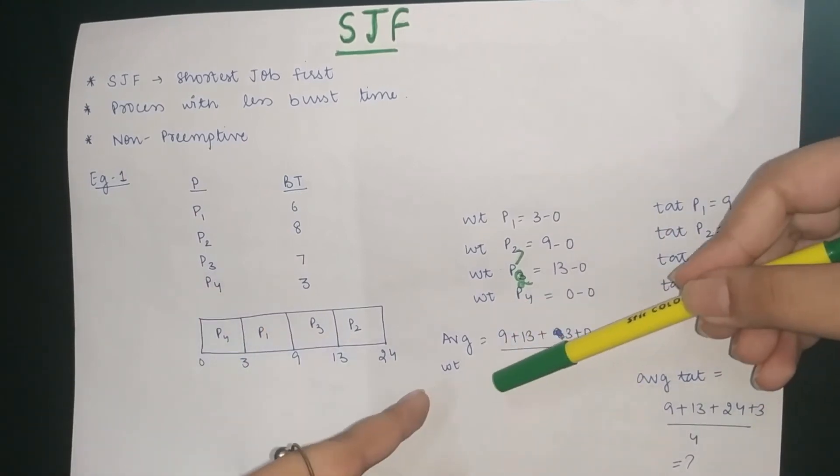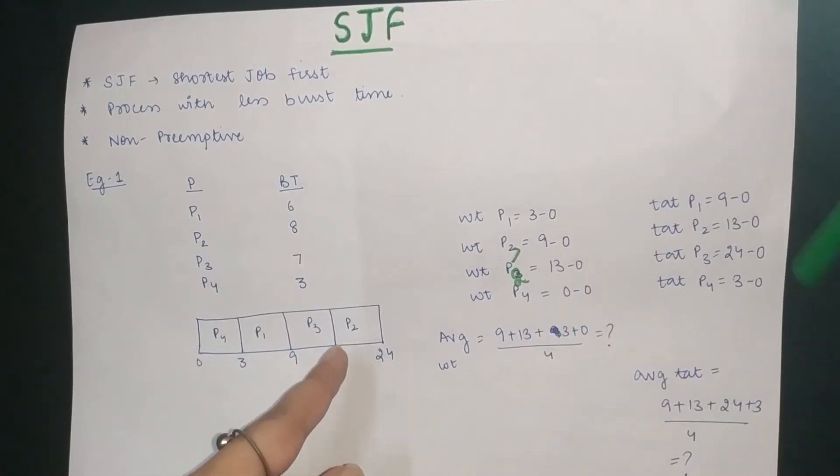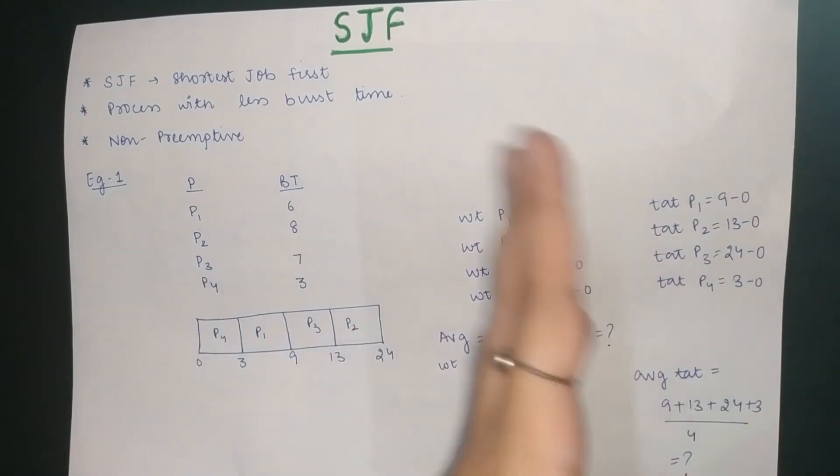So if we calculate the average waiting time, we will have the average waiting time. Turnaround time is the completion minus arrival time. P1 completes at 9.